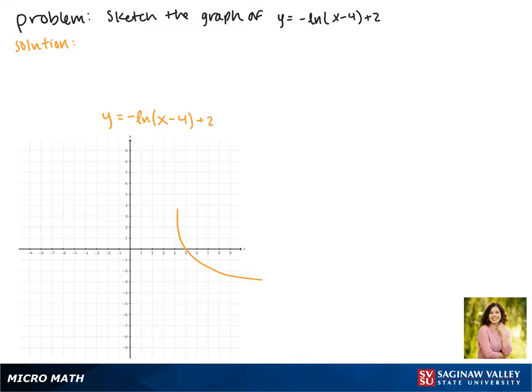Lastly we are adding 2 on the outside, so this is a vertical translation moving our function up two spaces. Now it passes through the point 5, 2.